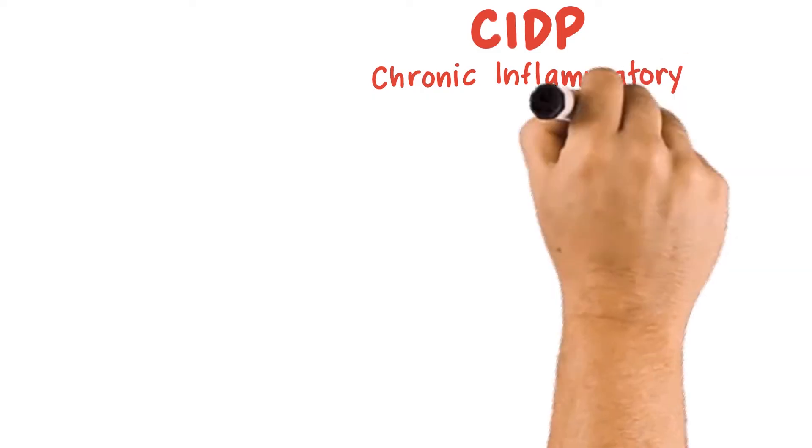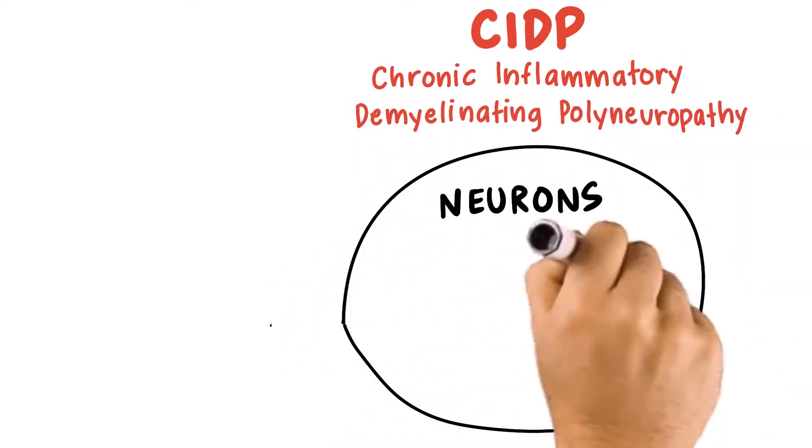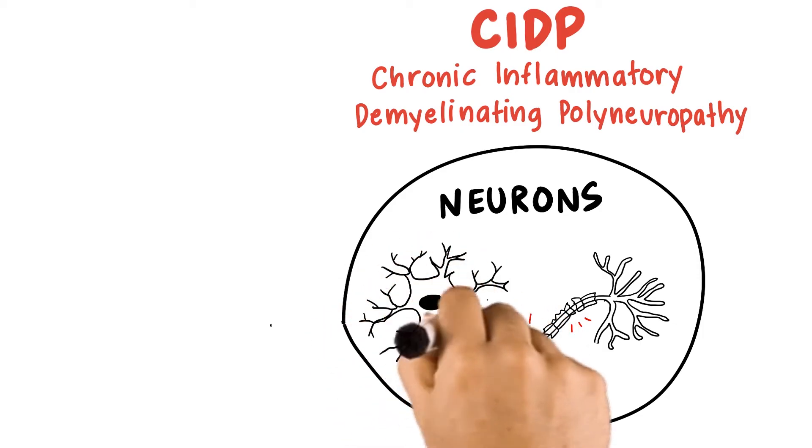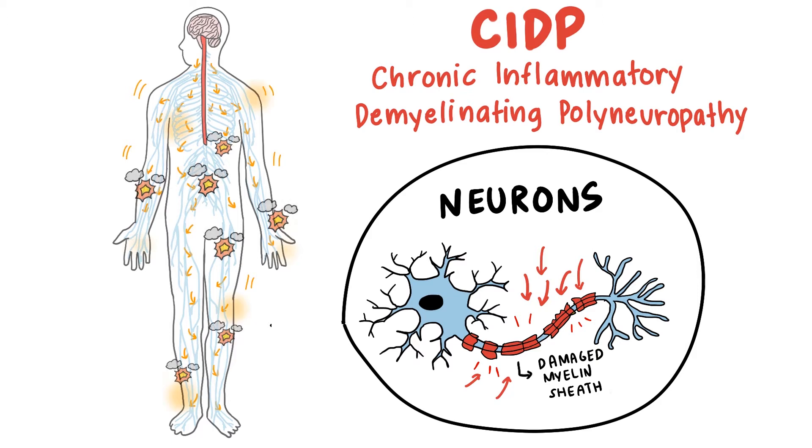CIDP, the chronic, progressive, or relapsing cousin of GBS, is an autoimmune disease, which means that your body mistakenly attacks itself and damages the myelin coating around your peripheral nerves, stopping your nerves from receiving and delivering their messages properly.